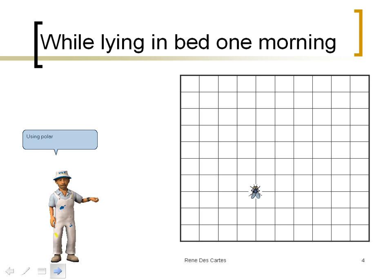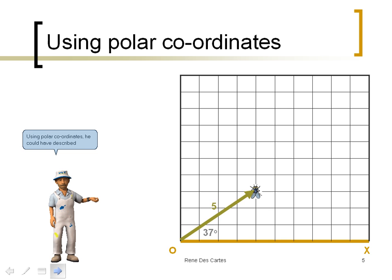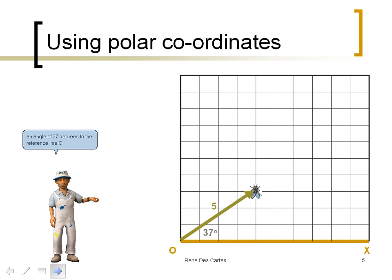Using polar coordinates, he could have described the position of the fly pictured as being five units from point zero at an angle of 37 degrees to the reference line OX.